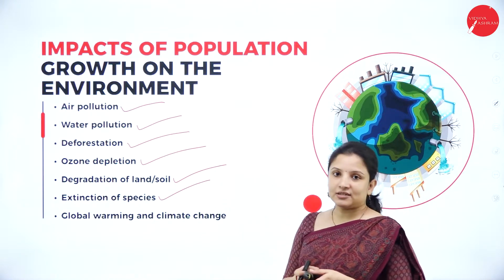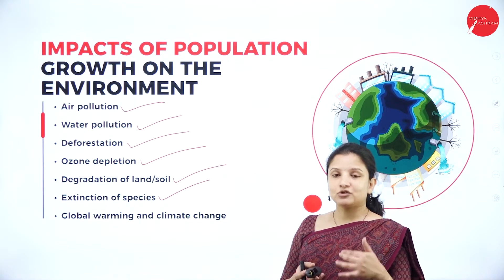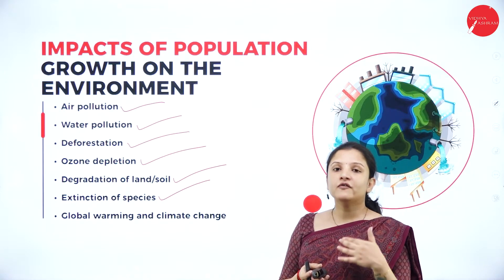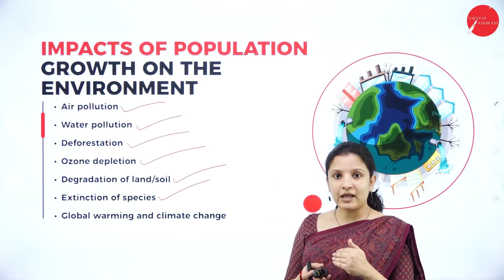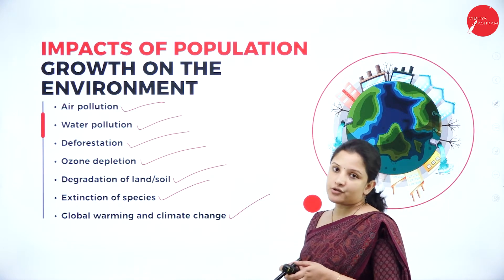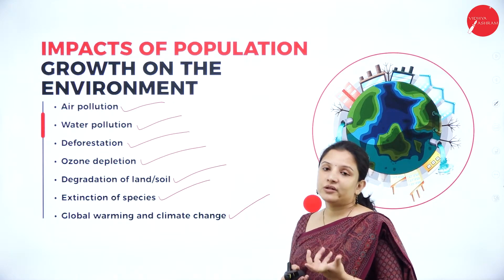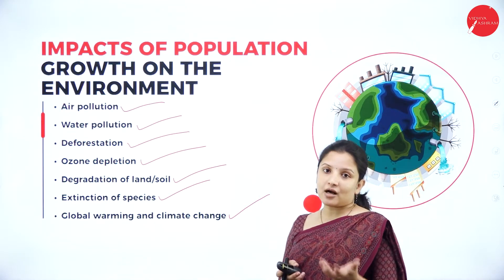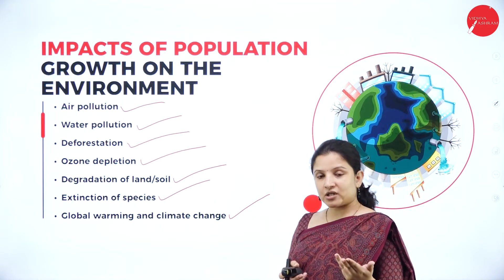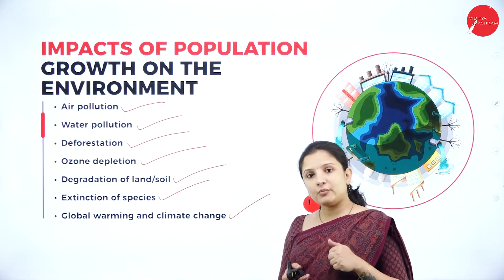Next, it can lead to extinction of species, which is interconnected with deforestation. Increase in population demands more space; the demand for space leads to cutting of trees, which will destroy a lot of organisms sharing the planet with us, leading to extinction or complete depletion of some species. It can also lead to global warming and climate change, linked to both deforestation and ozone depletion. As population increases, burning of fossil fuels and transportation increase, releasing greenhouse gases such as carbon dioxide and carbon monoxide, causing global warming and in turn climate change.